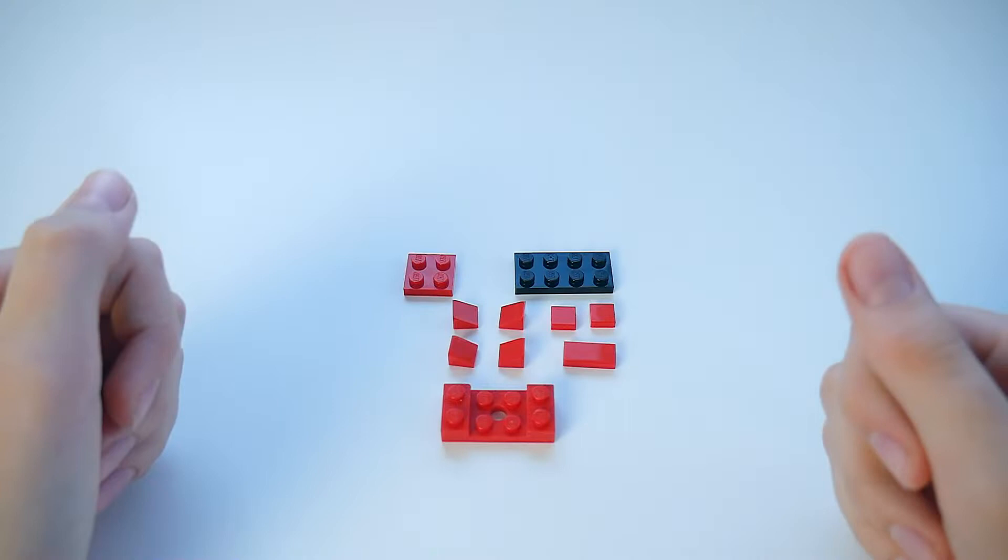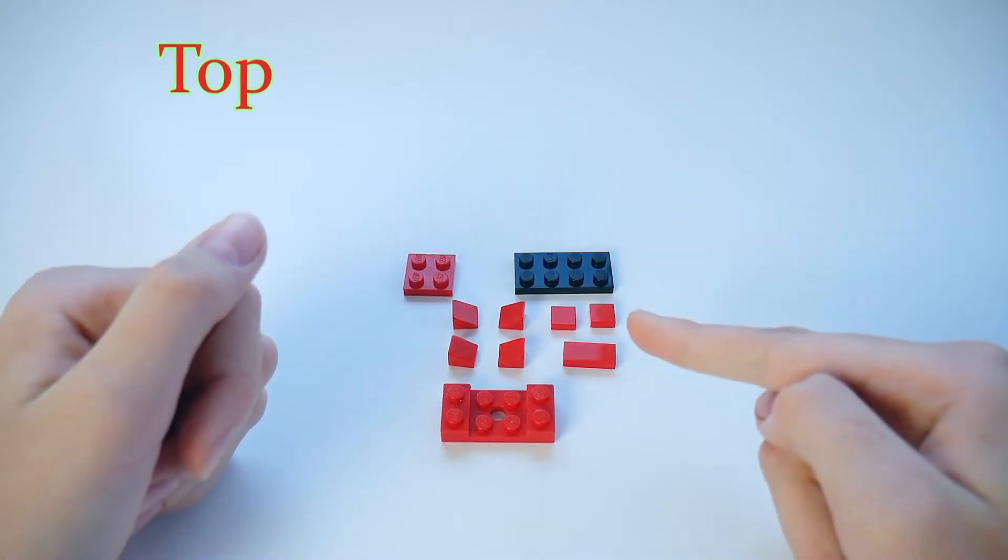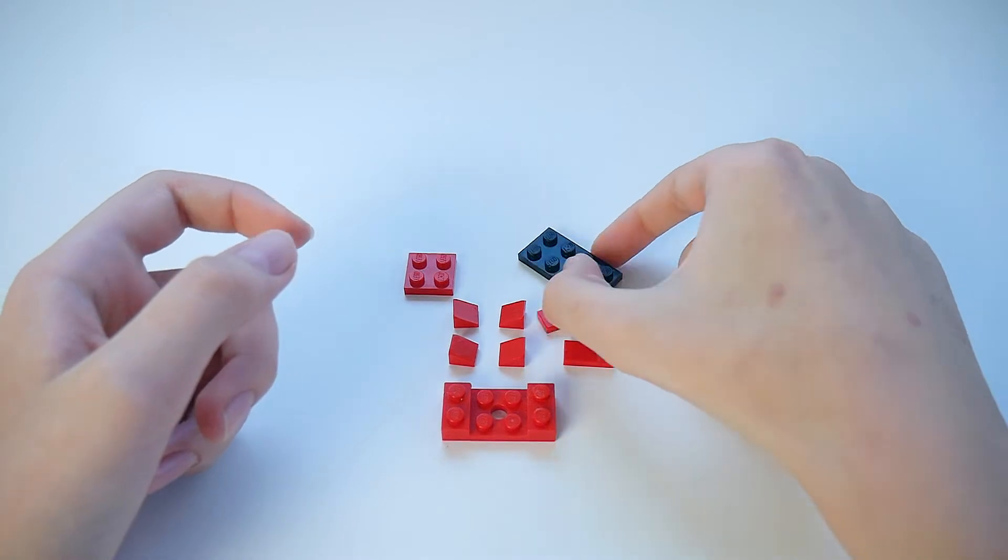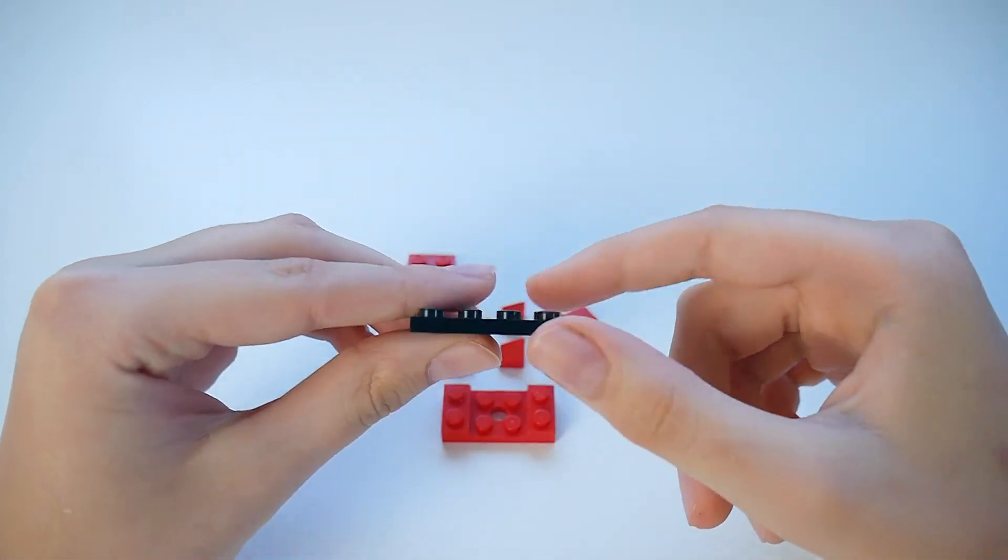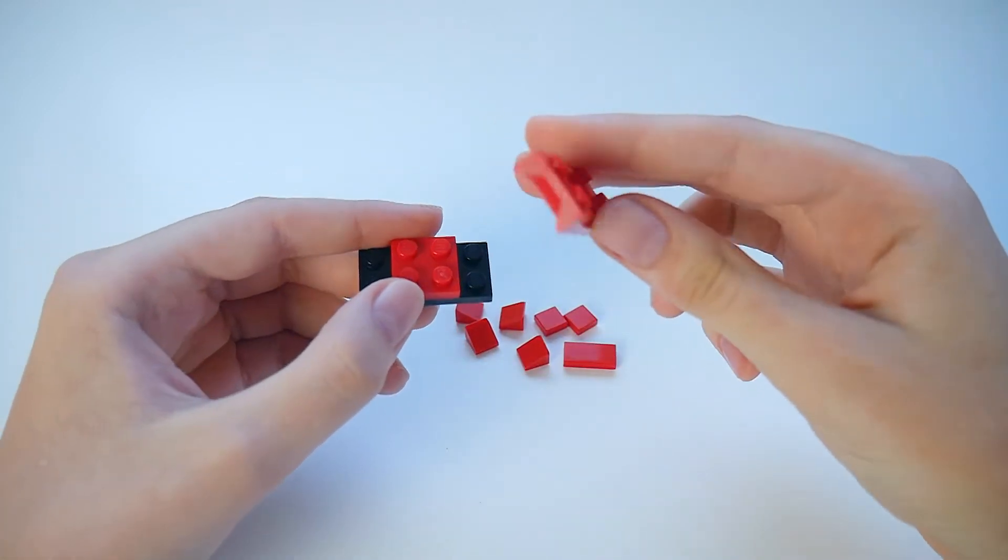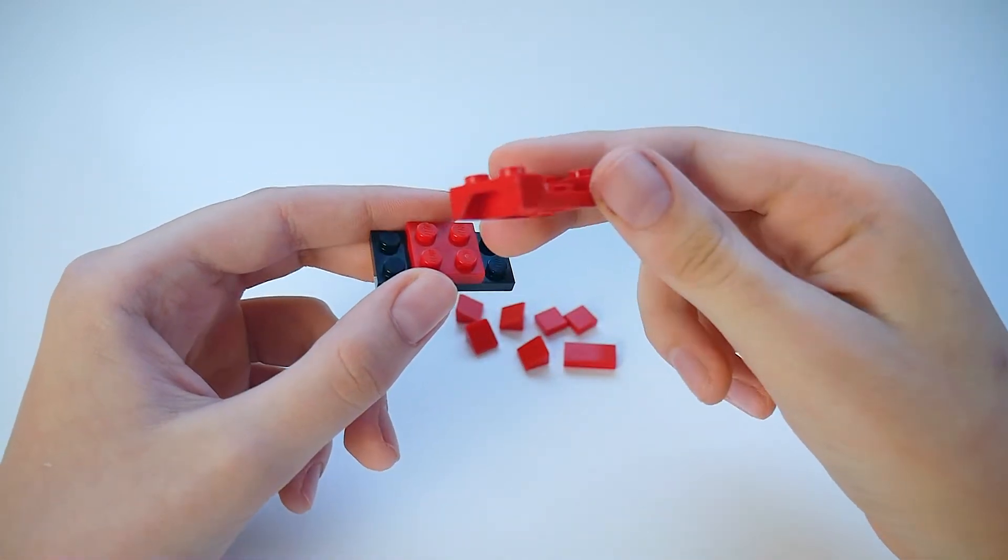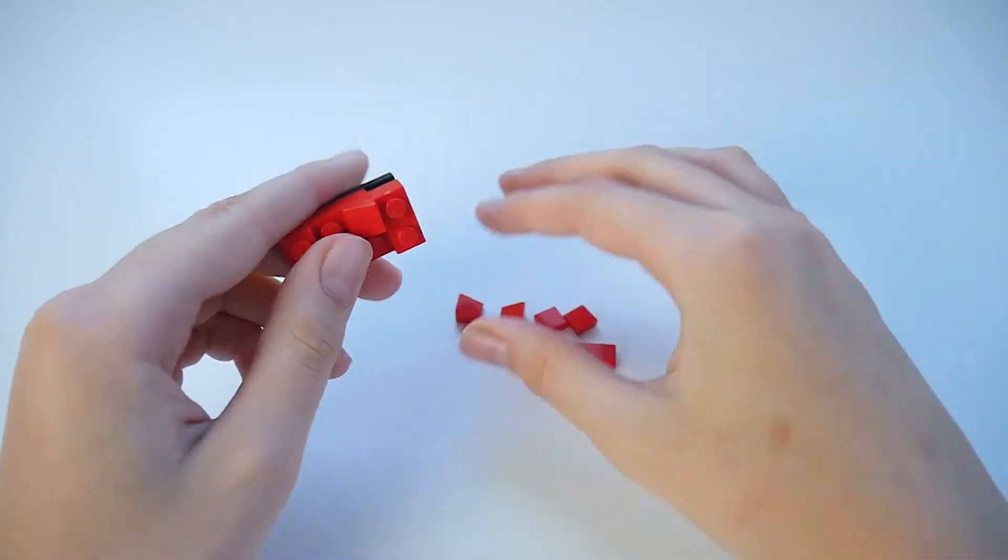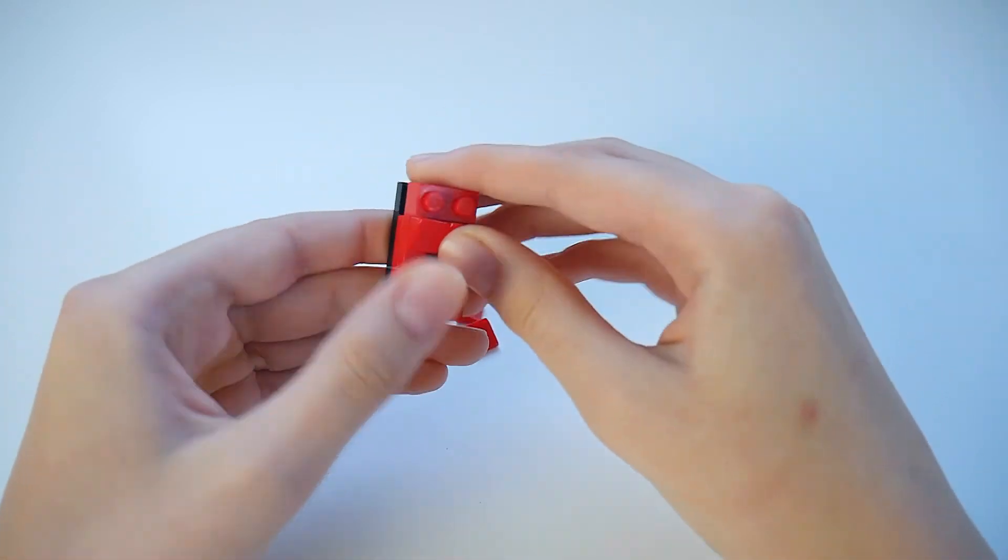Time for number three. These are the following pieces you will be needing. Don't mind the black piece. So to start with the top, we will be needing this black piece plate and this 2x2. We then take this weird thing, I don't know how to call it.